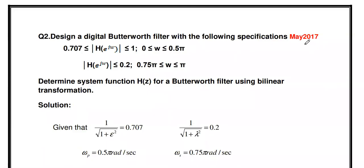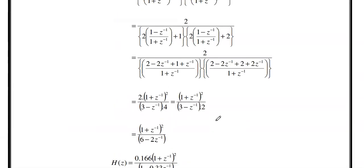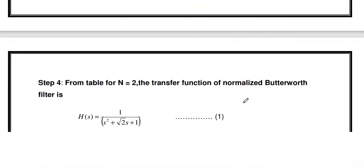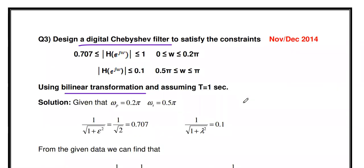One is the previous May 2017 question: design a digital Butterworth filter for the specification. Another one: if H of s is directly given, how to solve it using bilinear transformation. This is also a university question — May 2018. If you want to learn those videos, I will give the link in the description box, or in my channel under the discrete time signal processing and digital signal processing playlists, where all videos are available in sequence.